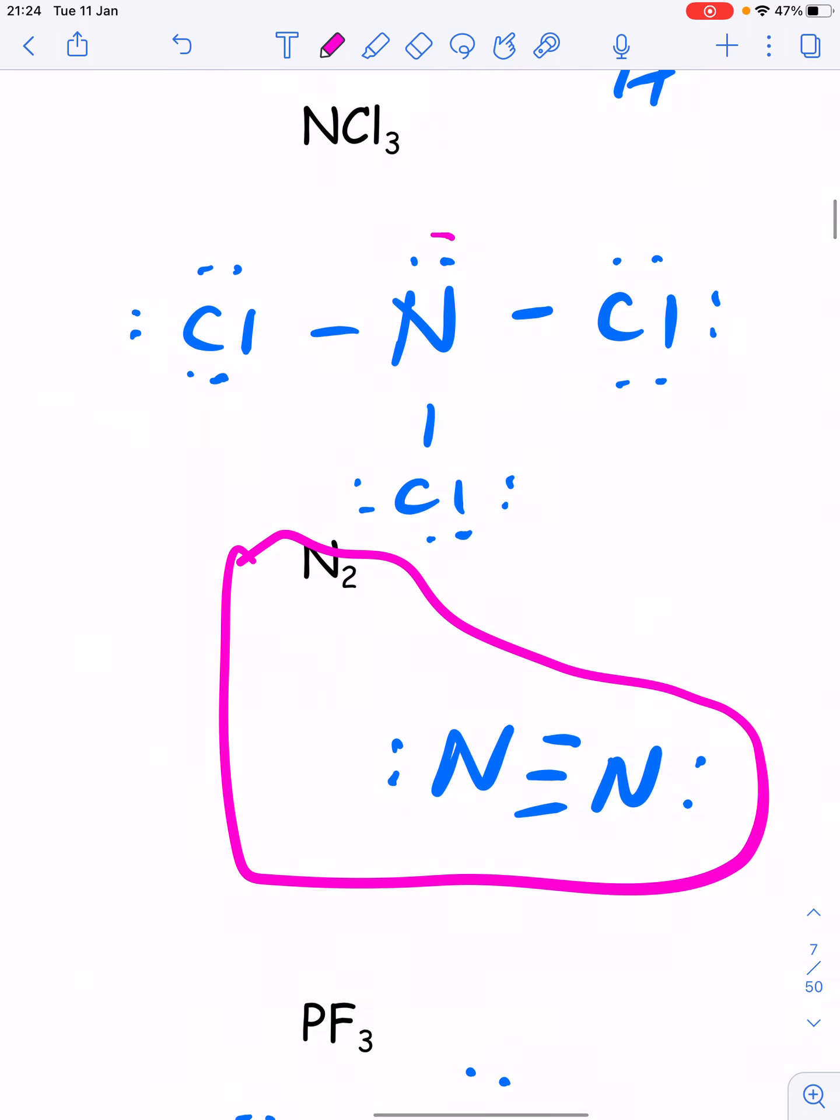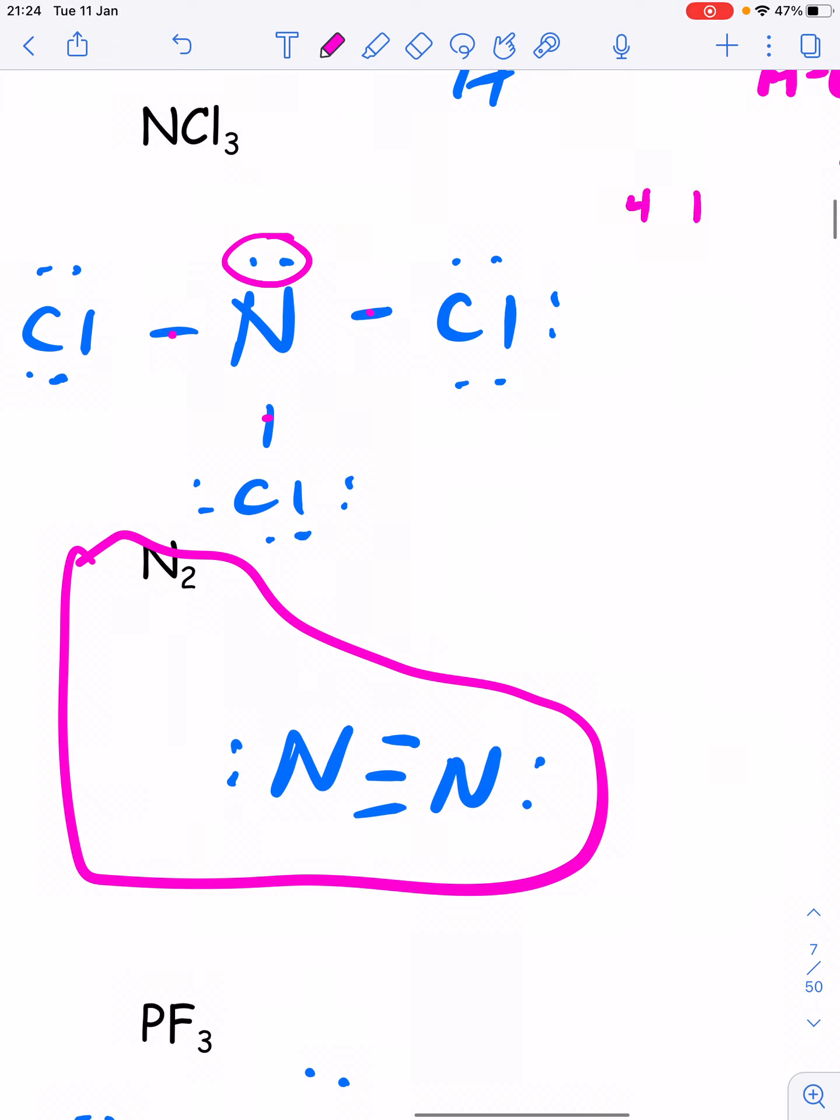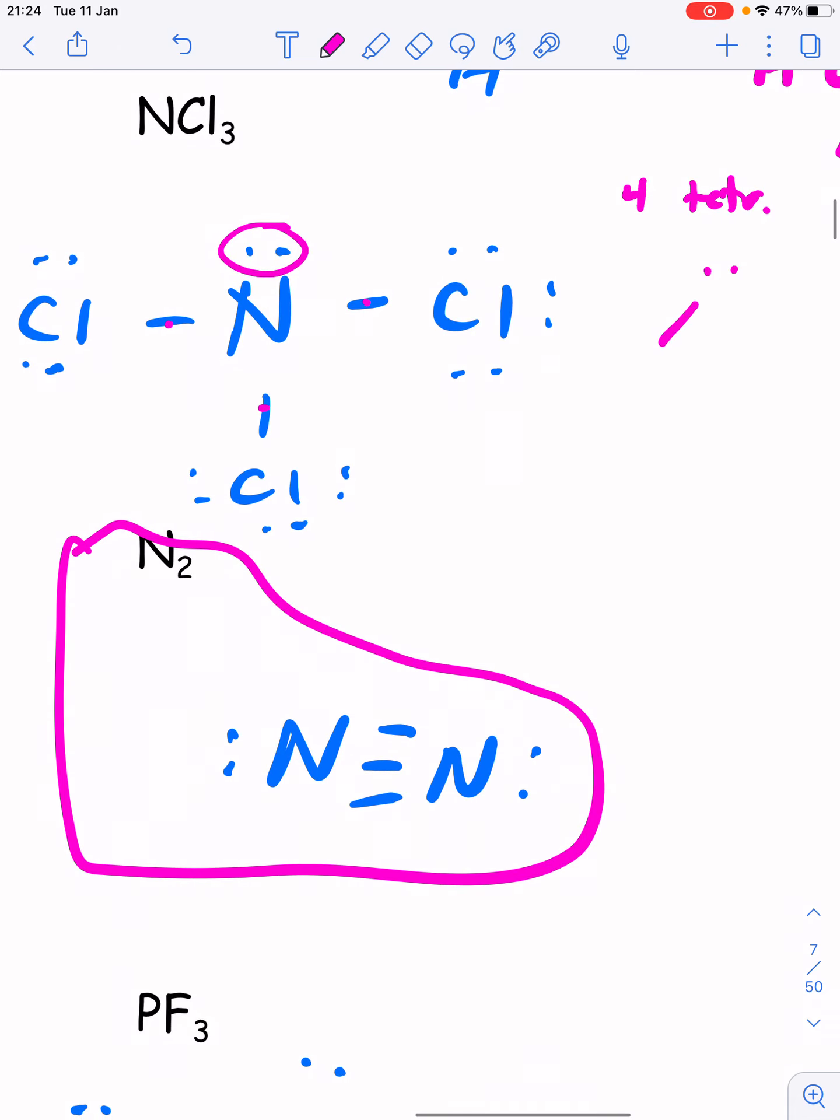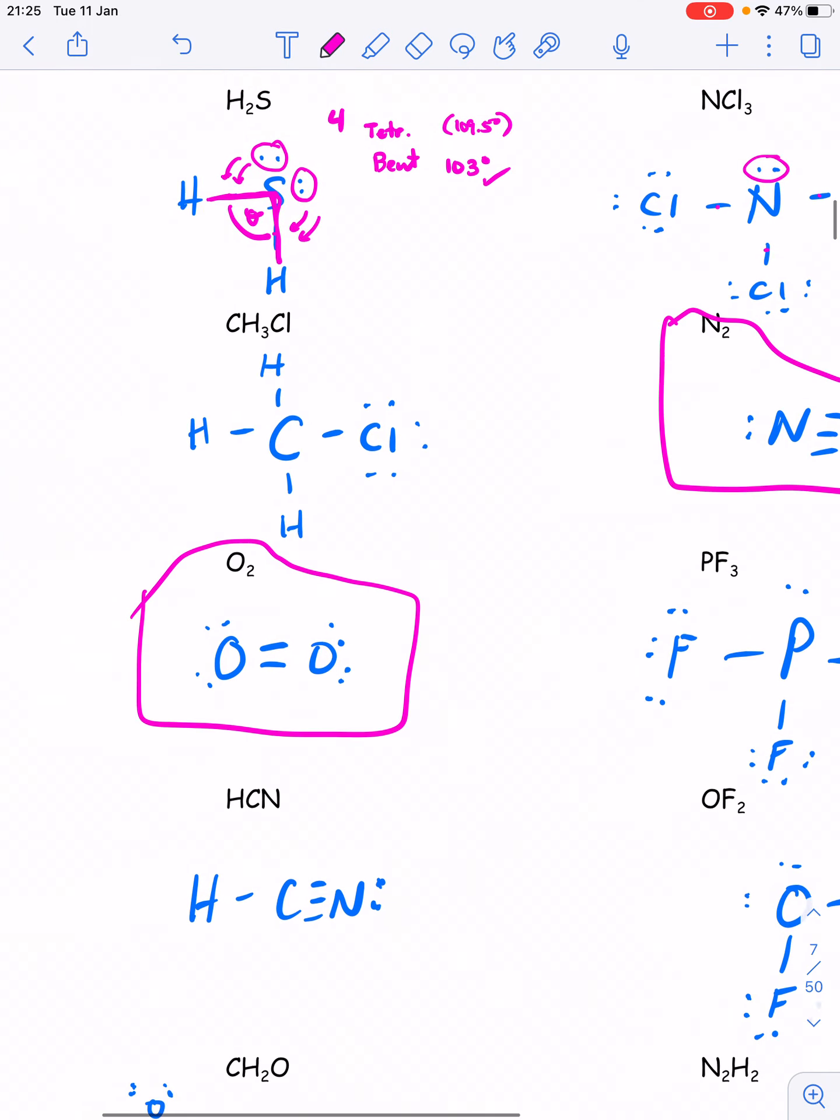Over here, I've got 1, 2, 3, 4 domains, lots of 4 domain shapes, tetrahedral electron domain geometry. Only one of them is a lone pair. That leaves the remaining 3 to form this sort of trigonal pyramid shape. So trigonal pyramidal, and the bonds are only going to be repelled by one lone pair, so that's minus 3. That gets us down to about a 106 bond angle, 106, 107.